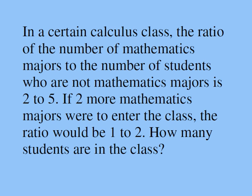In a certain calculus class, the ratio of the number of mathematics majors to the number of students who are not mathematics majors is 2 to 5. If two more mathematics majors were to enter the class, the ratio would be 1 to 2. How many students are in the class?